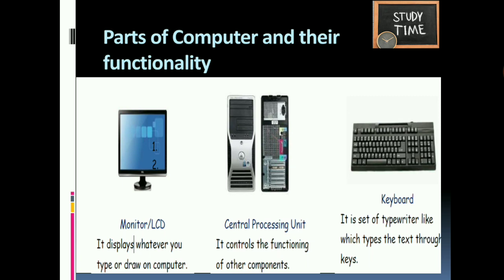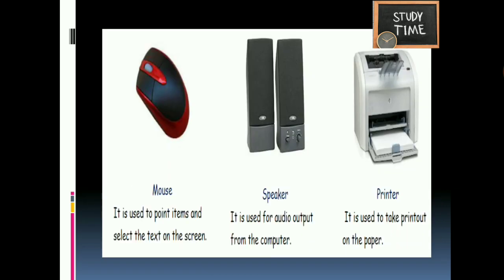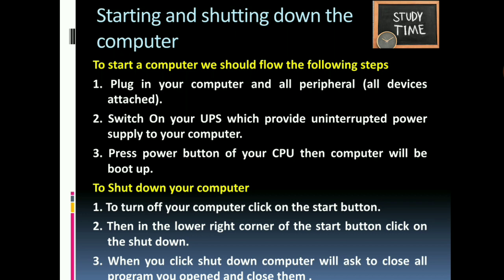The Central Processing Unit controls the functioning of all other components — it is called the brain of the computer. The keyboard is a set of keys used to type data and text. The mouse is used to point to items and select text on the screen. The speaker is used for audio output from the computer.